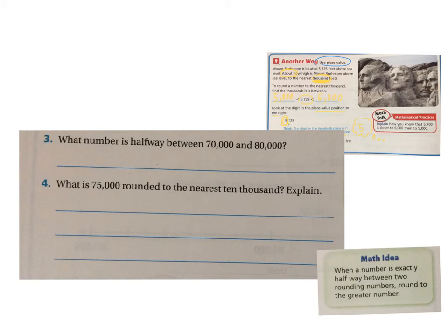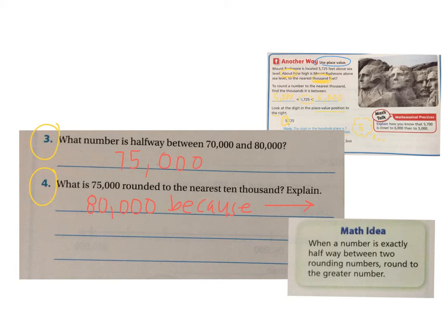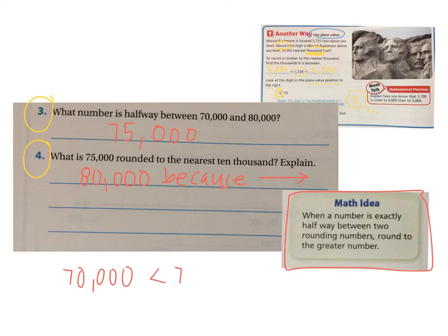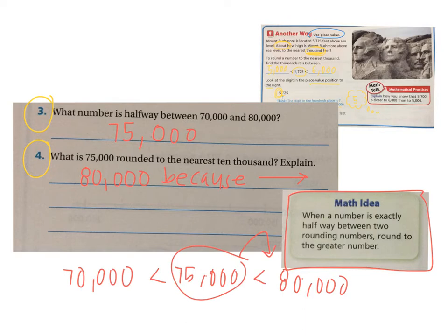Pause your video now and see if you can answer questions three and four. The answers will come up in just a couple seconds, so pause it right now before the answers come up. Here's your answer so you can check your thinking: 75,000 is the number that is halfway between 70,000 and 80,000. For question four, 75,000 rounded to the nearest 10,000 is 80,000. The math idea says: when a number is exactly halfway between two rounding numbers, you always round to the greater number. Since 75,000 is exactly halfway between 70,000 and 80,000, the rule is you round up to the greater number — in this case, 80,000.